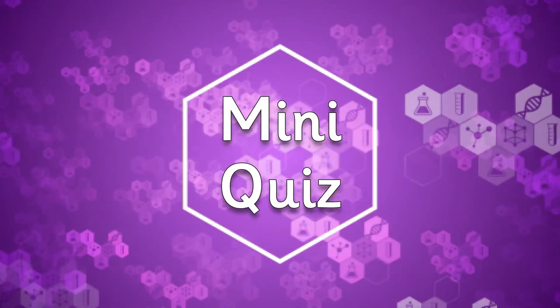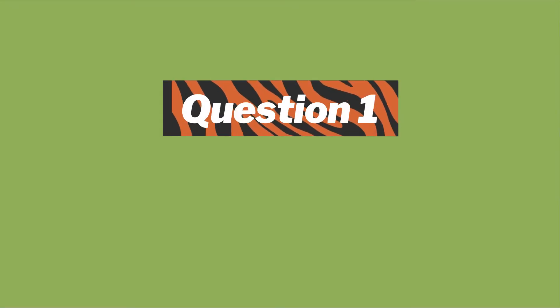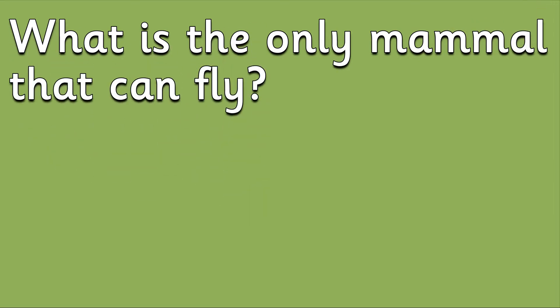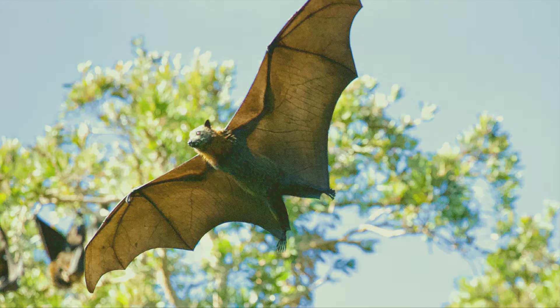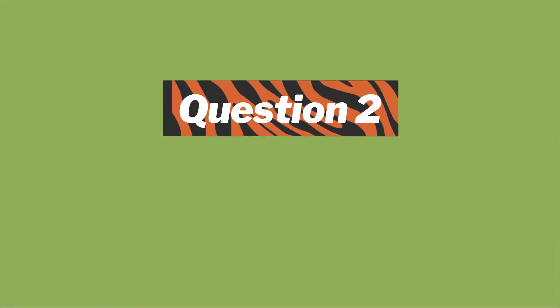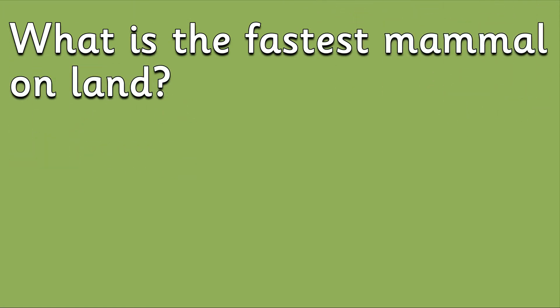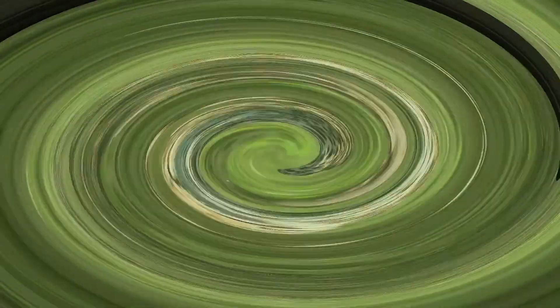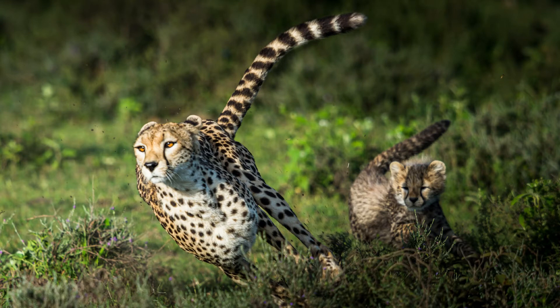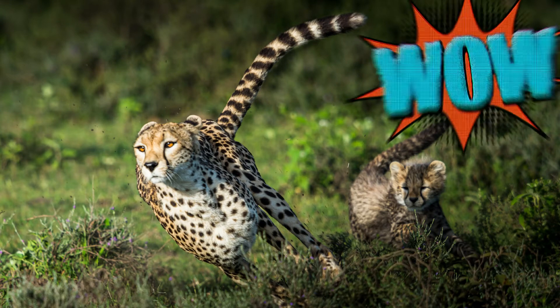Now it's time for a mini quiz! Question one: what is the only mammal that can fly? It's a bat! Question two: what is the fastest mammal on land? It's a cheetah — they can run up to 70 miles per hour. Wow!